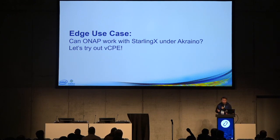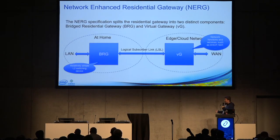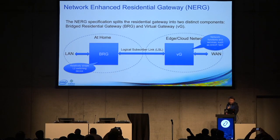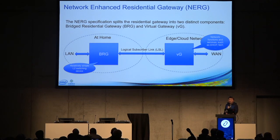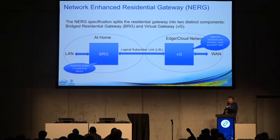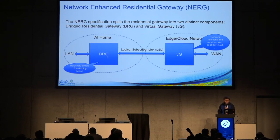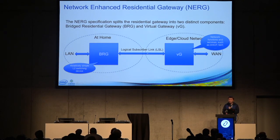Virtual CPE — before introducing virtual CPE, there's a concept called the residential gateway, or RG. RG has two parts: one is called BRG, which runs at home or the community, and there's another called the virtual gateway, which runs on the core network or data center. In this diagram, the BRG serves as L2 switching. Devices at home connect to the BRG, the virtual BRG, through a logical subscriber link to the VG. The VG helps them connect to the internet and WAN.